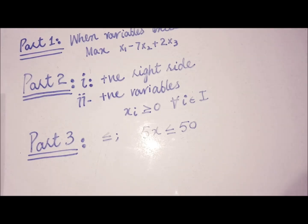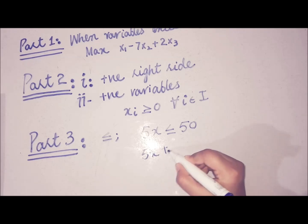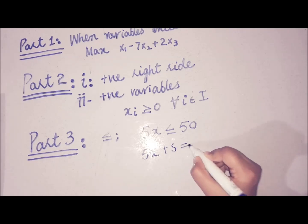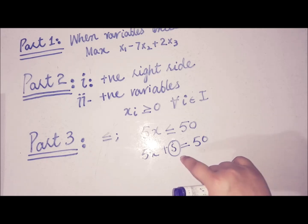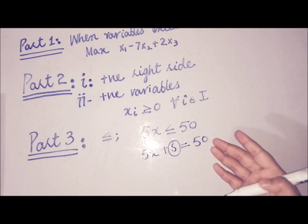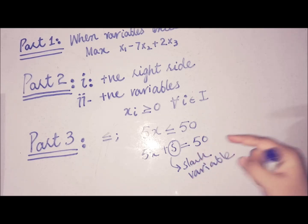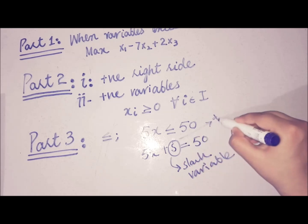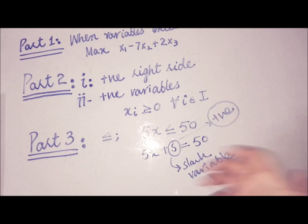We represent this gap with a variable called a slack variable. Because x should be less than 10 for optimality, we add a variable s so that 5x plus s equals 50. This slack variable represents the difference between available resources and used resources — it is the unused amount of resources, and by its nature it must be non-negative.